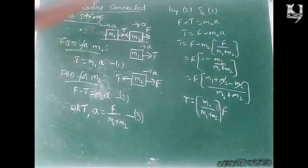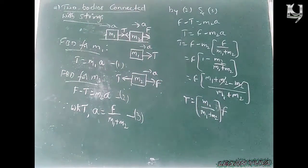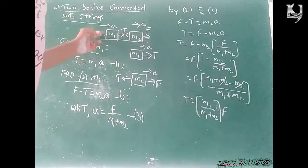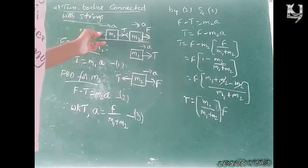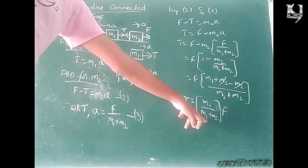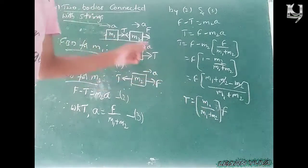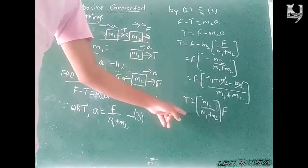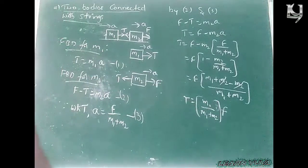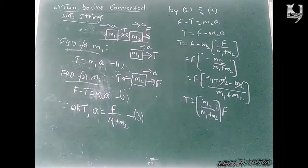So, in the previous case, if the force is acting on the M1 side, the tension force is M2·F over M1 plus M2. And if the force is acting on the M2 side, the tension force is M1·F over M1 plus M2.